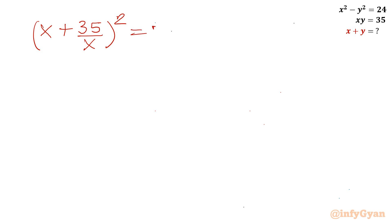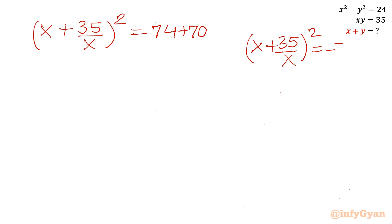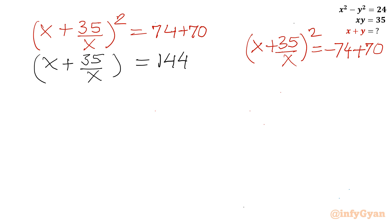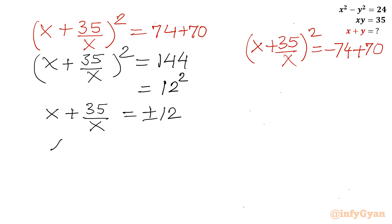The first equation gives x plus 35 over x, whole squared, equals 144, which is 12 squared. Taking the square root: x plus 35 over x, which equals x plus y, gives plus or minus 12. Since 35 over x equals y, these are our real solutions.